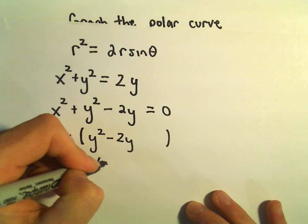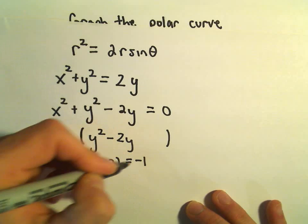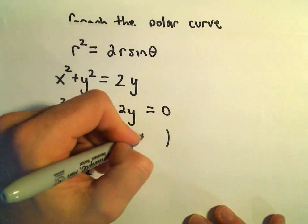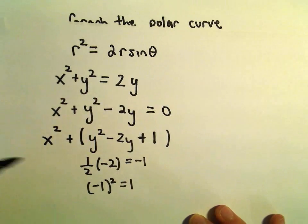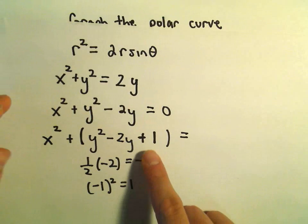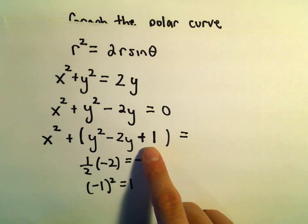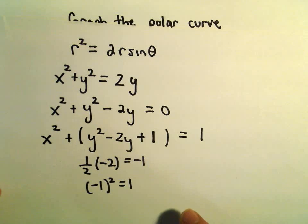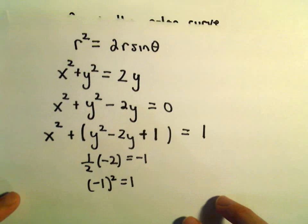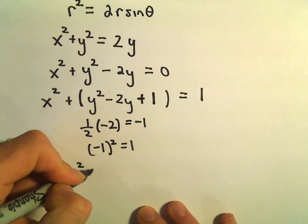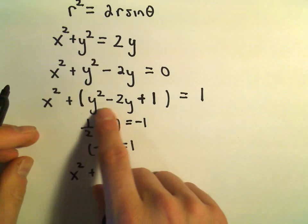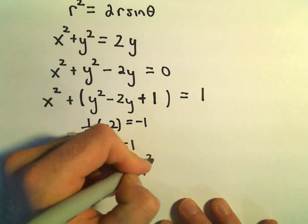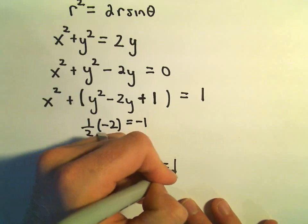We take one half of negative 2, which is negative 1. Negative 1 squared is going to be positive 1. So we're going to add a plus 1 inside the parentheses. If you expanded the parentheses, this plus 1 would not have been there before, so that means I have to add 1 to the right side to keep the equation balanced.